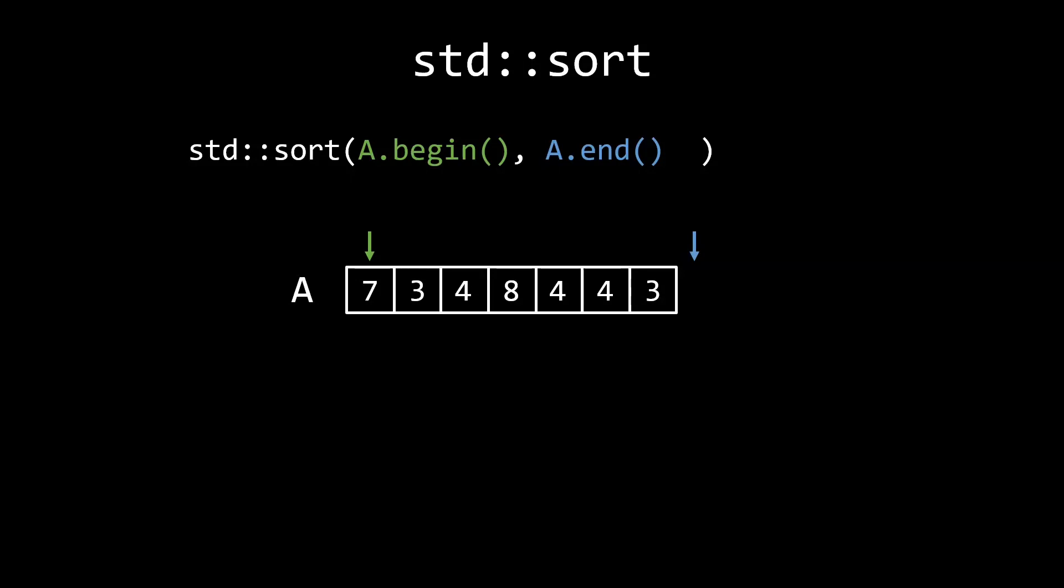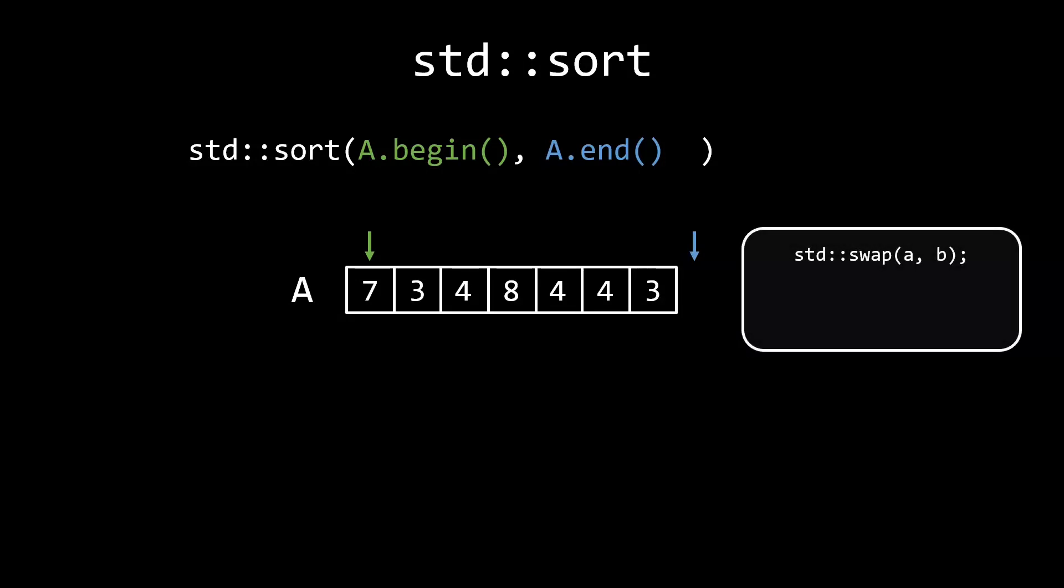The sort algorithms from the Standard Library all work using the standard swap to swap elements. This means that they make use of move operations when they are available. As a result, you can efficiently sort containers of elements that are expensive to copy, such as big strings.